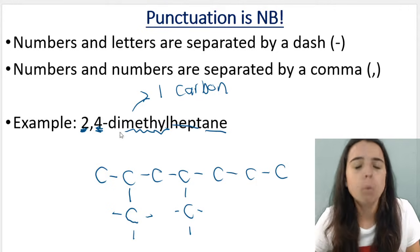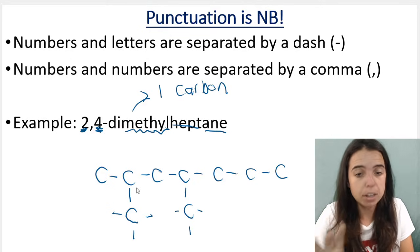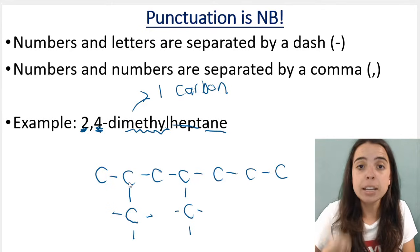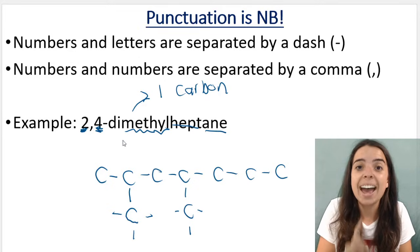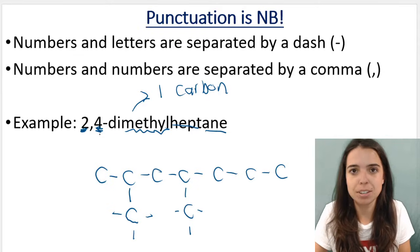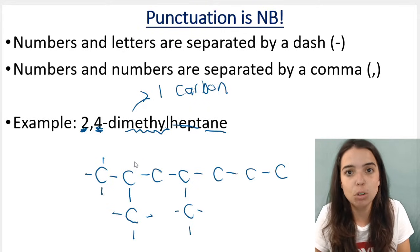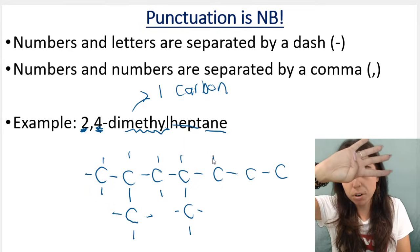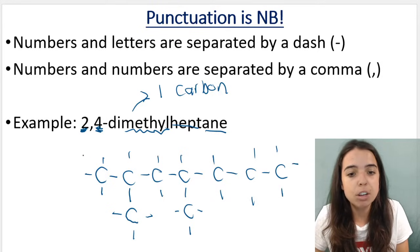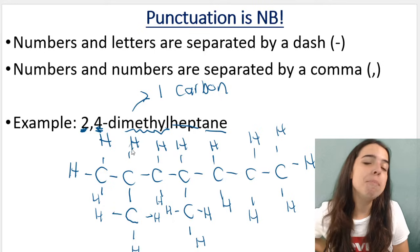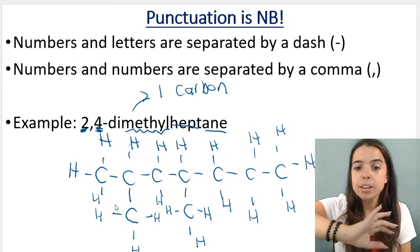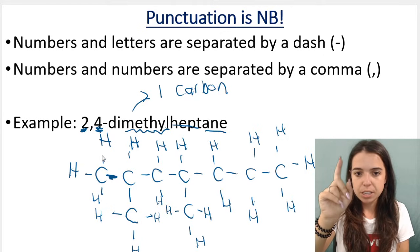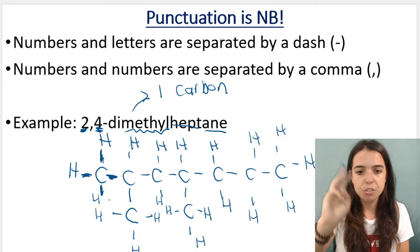Why dimethyl? Di means two — because I have two methyl branches I need to put the word di in there. If I had three methyl groups I would say trimethyl. Please never leave your organic compounds without adding in the H's. Alkanes are saturated hydrocarbons — they consist of only carbons, hydrogens, and single bonds only. Each carbon must have four bonds, so make sure that every carbon has four bonds as you fill in the H's.